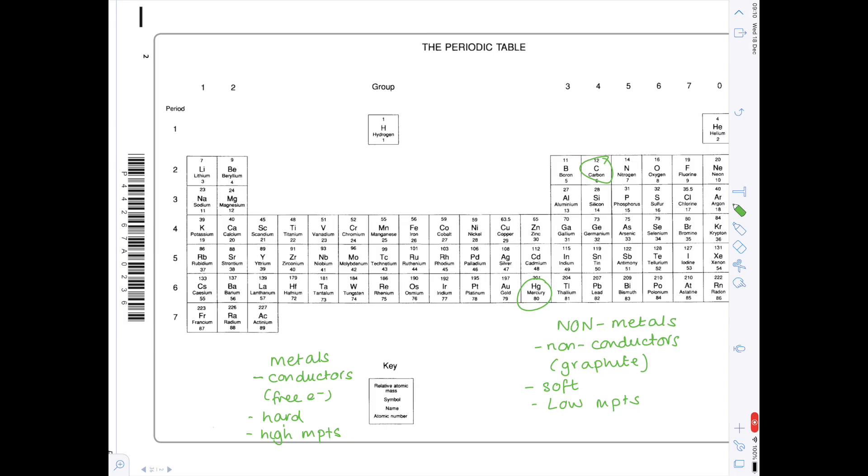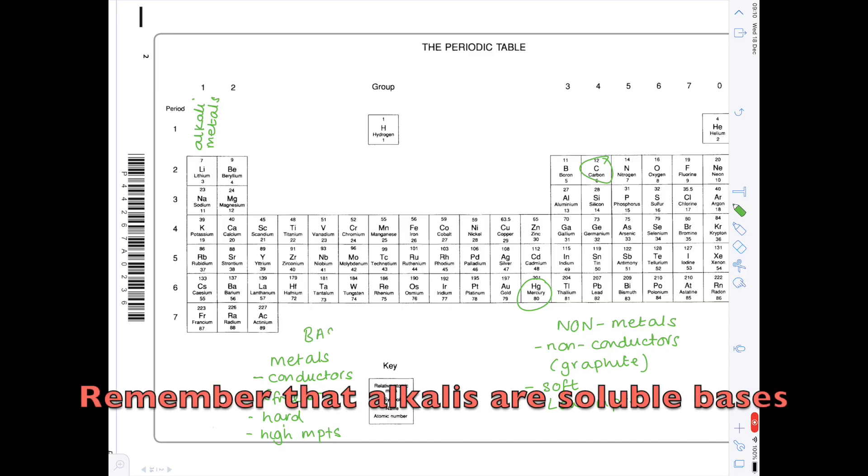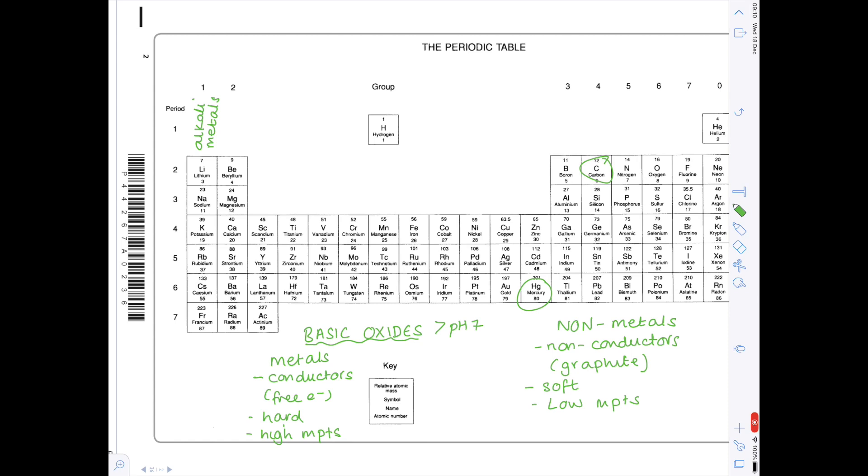Obviously there are exceptions to these rules. Something like mercury is a metal which is unusual in that it has a low melting point and then carbon in the form of graphite and diamond is extremely hard and has a very high melting point. So these rules don't apply to every single element but in general they hold true. Remember that group 1 metals are known as the alkali metals. This means that when they are added to water they produce an alkaline solution. So hopefully therefore that will help you realise that metals produce basic oxides.